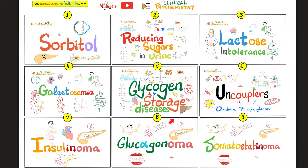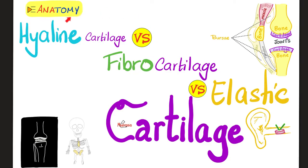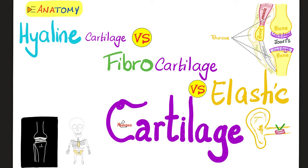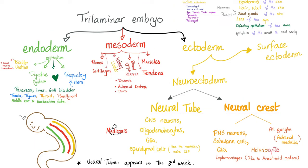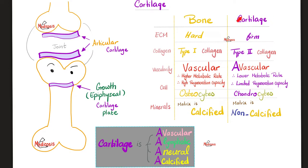If you recall from my anatomy videos on bones and cartilages, both bones and cartilages, as well as tendons, ligaments, and muscle, came from the mesenchyme, which came from the mesoderm of the embryo. Bones come from mesoderm. Bones are hard; cartilages are firm. Touch your forehead — that's your frontal bone, which is hard. Touch the tip of your nose — that's a cartilage, which is firm and softer than hard. Bones have type 1 collagen; cartilages have type 2 collagen.